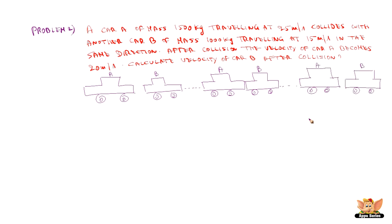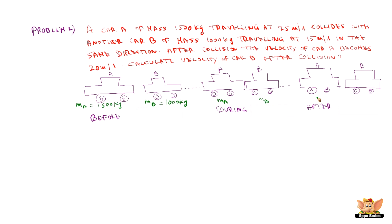The collision is shown in three stages: before collision, during collision, and after collision. Before collision, mass of car A (MA) is 1500 kg and mass of car B (MB) is 1000 kg. The masses do not change across all three stages. Velocity of car A before collision, VA, is 25 meters per second, and velocity of car B, VB, is 15 meters per second.